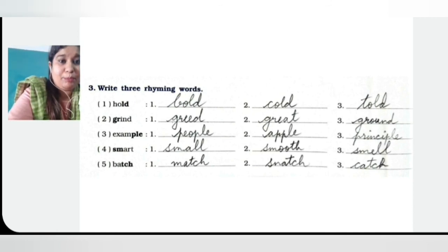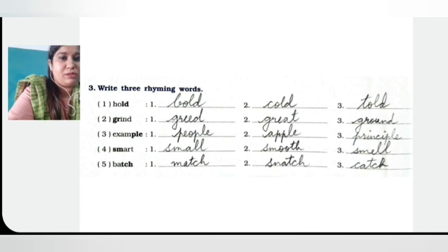For example, we want the letters P-L-E at the end. So P-E-O-P-L-E — people, A-P-P-L-E — apple, and P-R-I-N-C-I-P-L-E — principle.